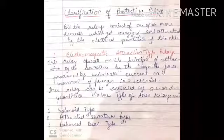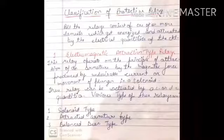The electromagnetic attraction type has three subtypes. First is the solenoid type, where the plunger or iron core moves into a solenoid and the operation of the relay depends on the movement of the plunger. Second is the attracted armature type, which operates on the current setting — when the current in the circuit exceeds beyond the limit, the armature gets attracted by the magnetic force.